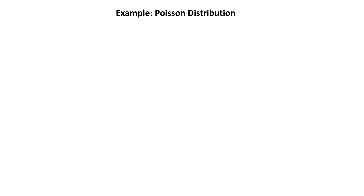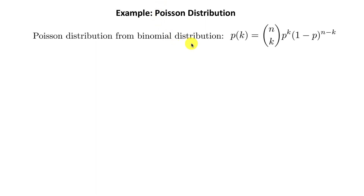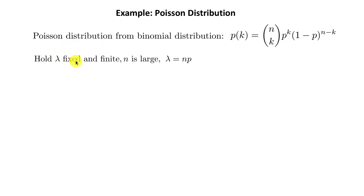As a second example, let's take the Poisson distribution, which is very useful for finding queue lengths, how often calls come into a call center, or waiting times for restaurants and so forth. This can be derived from the binomial distribution as a special limit. We introduce a parameter lambda which we keep fixed and finite and let n be large, so p equals lambda divided by n. You'll ask what is the meaning of lambda — just wait and you'll see it's related to an average quantity.